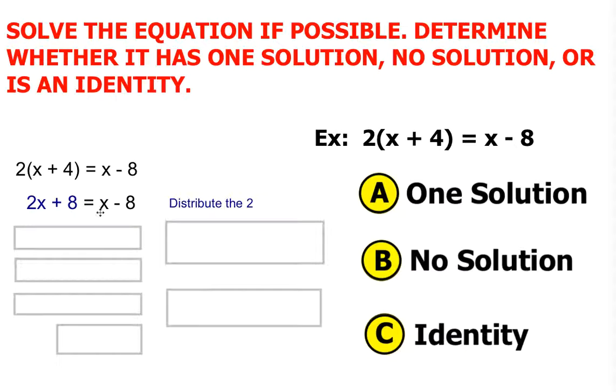Notice there are variables on both sides of the equation. What will we do to gather all the x variables on the same side? Here's my hint to you. Gather the x variables on the left side.